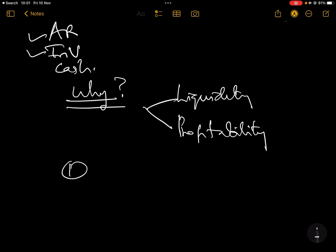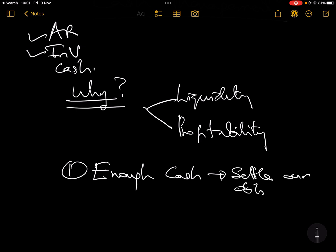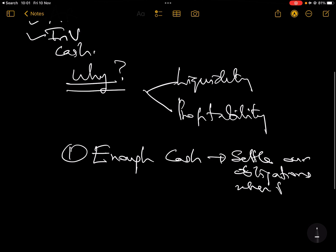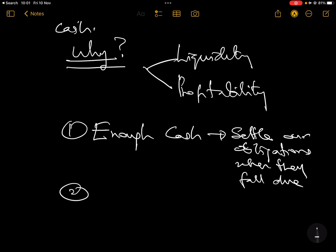We manage cash because, number one, we want to make sure we have just enough cash to meet our obligations when they fall due. And secondly, we don't want to have too much cash, because if you have too much it means you are not investing, and if you are not investing you are not going to be profitable.